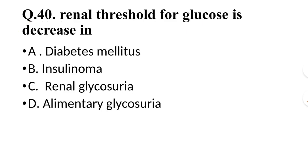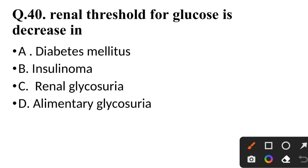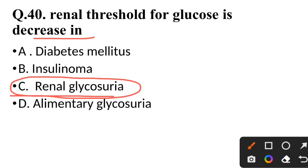Question 40: Renal threshold for glucose is decreased in — correct answer is renal glycosuria.